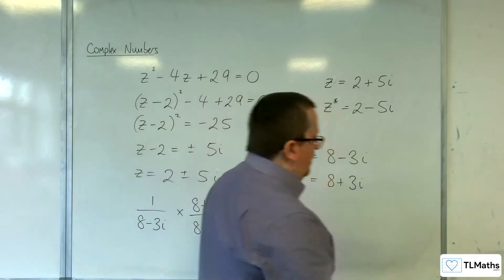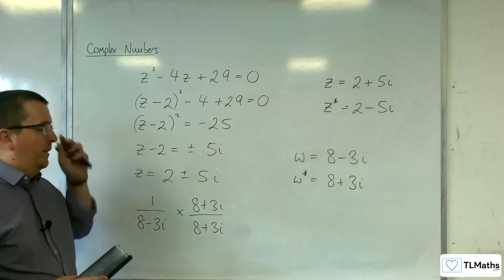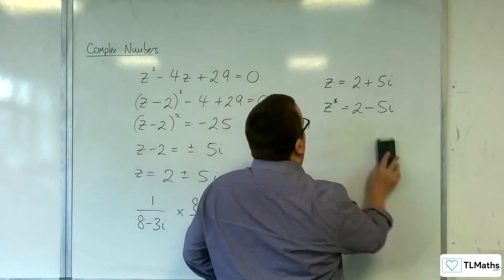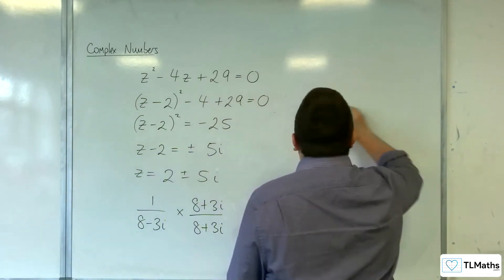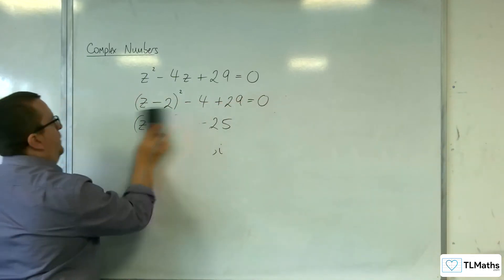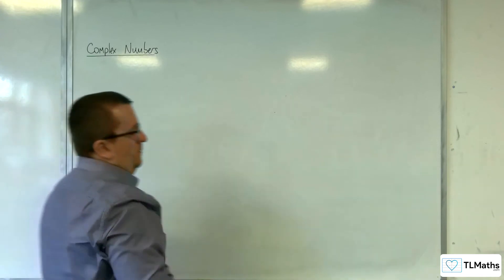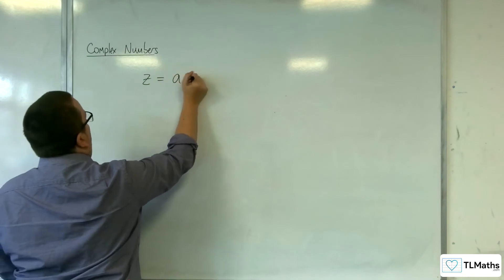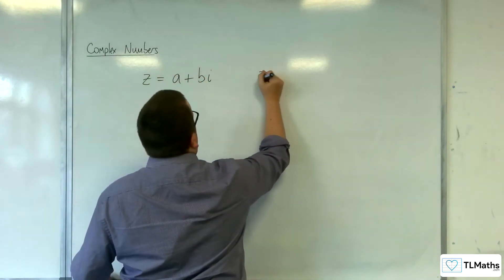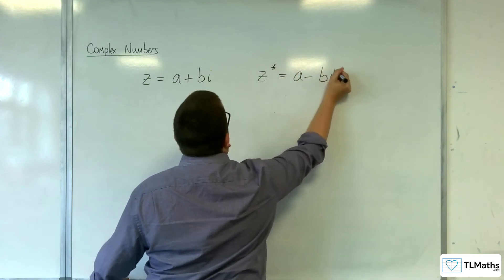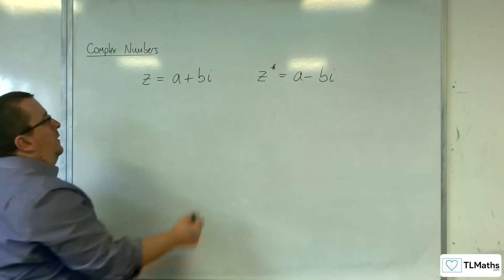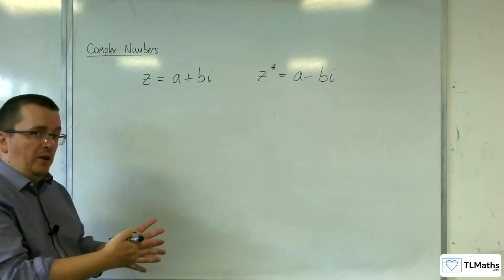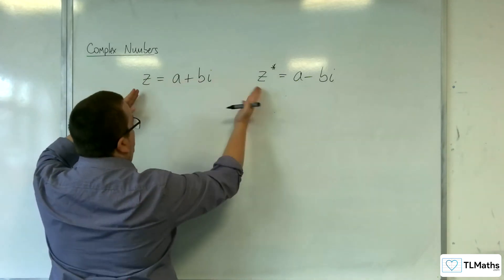Now, once you've got that clear of what the complex conjugate is in reference to another complex number, what you need to understand is how it can then work with another complex number or with its pair. So if we said that z = a + bi, then its complex conjugate would be a - bi. Now what we were doing when we were simplifying the division, when we were dividing by complex numbers, was we were multiplying z by z*.